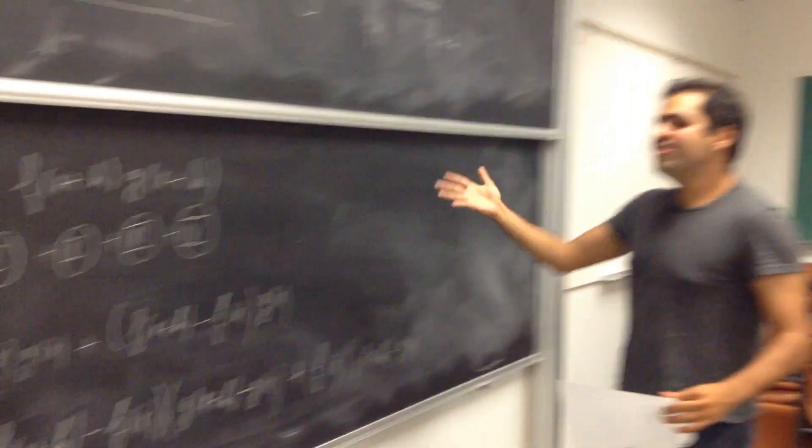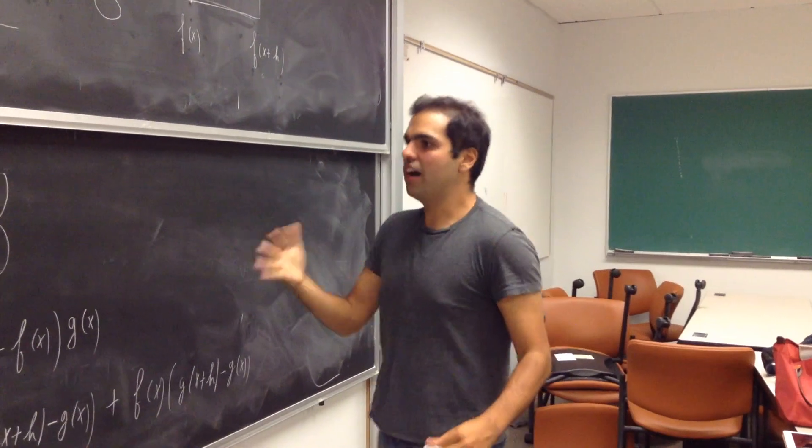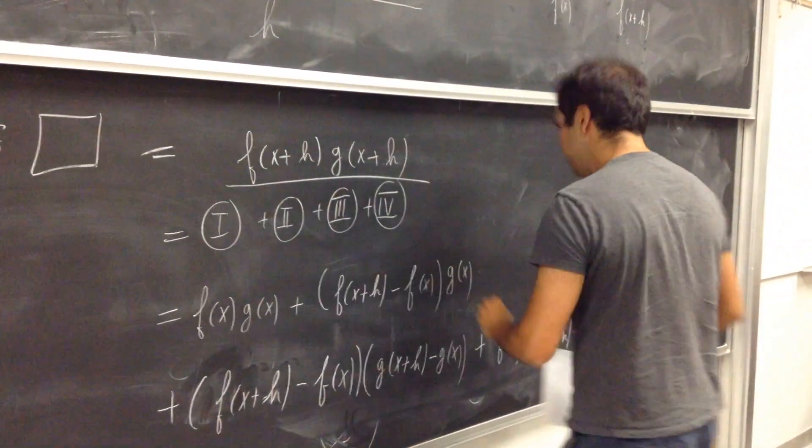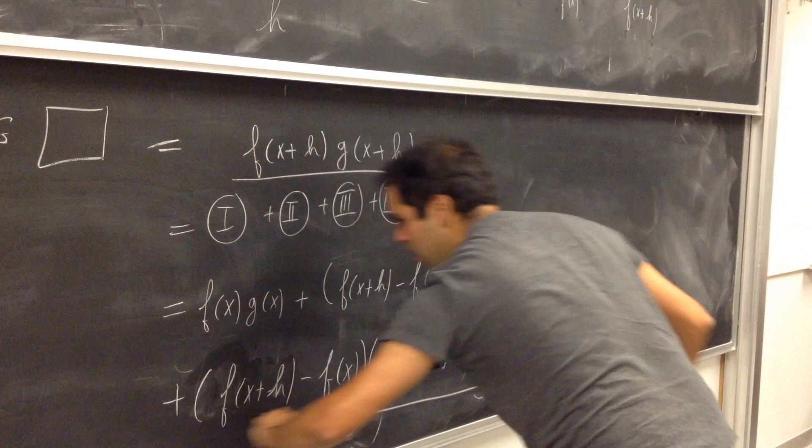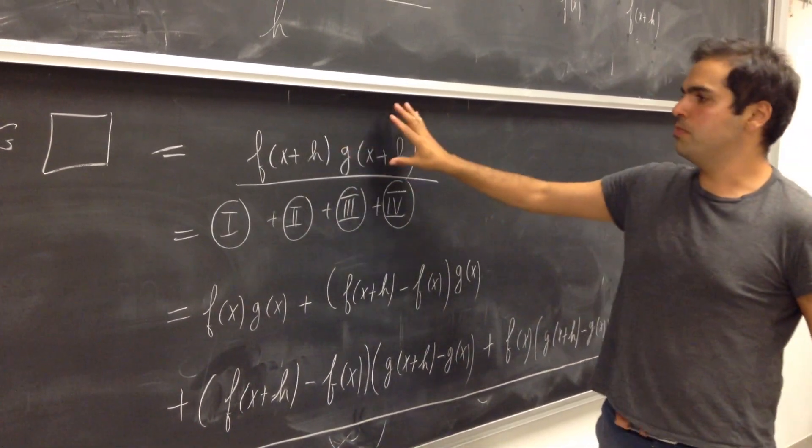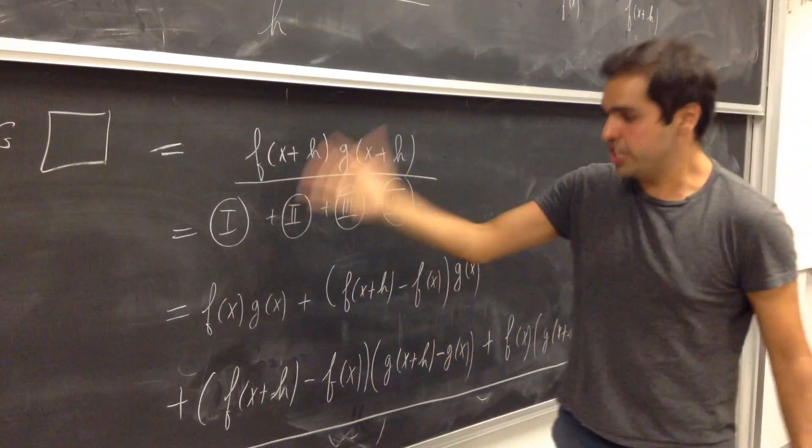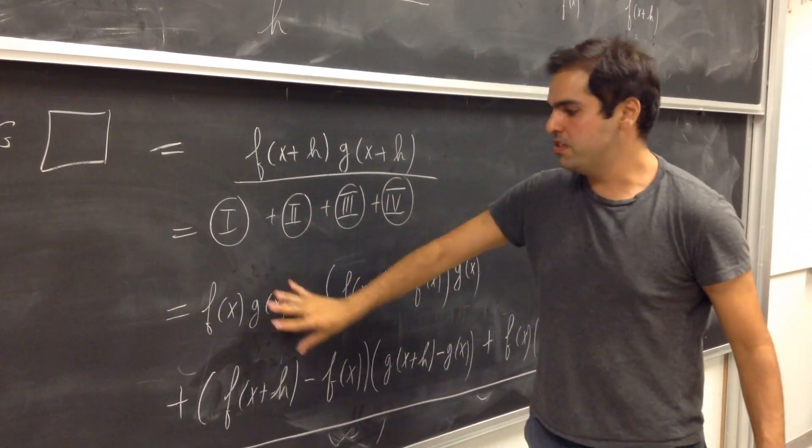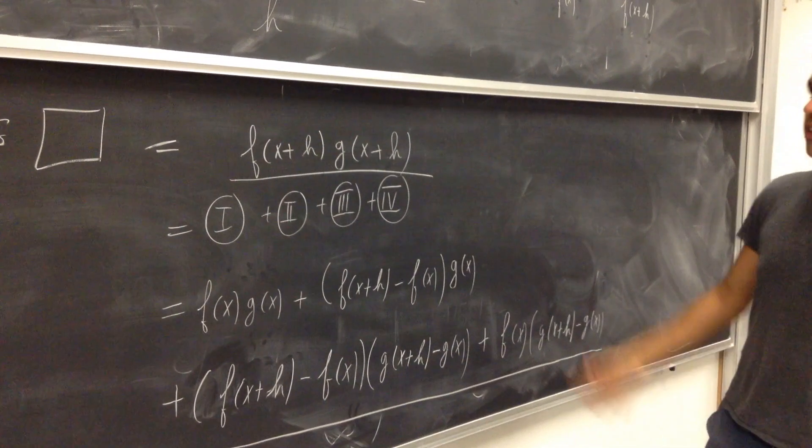Alright. This is very complicated, but it is progress. The progress is good. What we found in the end is that f of x plus h times g of x plus h is equal to f of x g of x plus all this other junk.